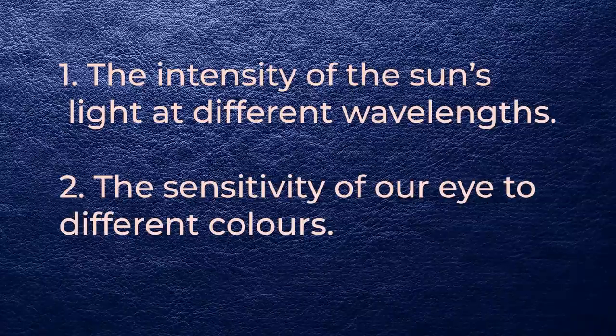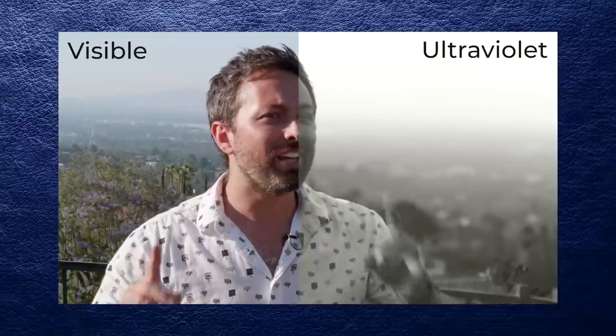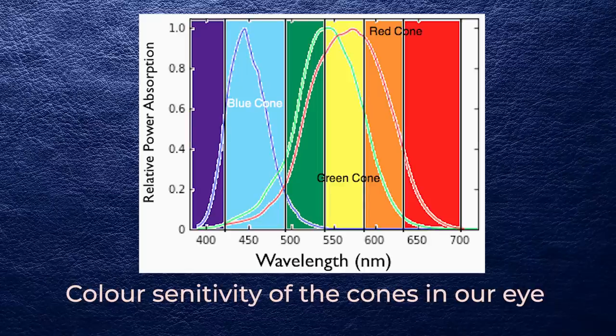Okay, so then what about violet? Shouldn't the sky be violet, since violet has a shorter wavelength and should get scattered more? You're right — violet should get scattered more, but there are two reasons why the sky isn't violet: the intensity of the sun's light at different wavelengths, and the sensitivity of our eye to different colors. If you look at this graph, the intensity of violet and ultraviolet wavelengths in sunlight is less than that of blue — so there literally is less violet and UV coming from the sun. There's a video by Veritasium where he uses a UV camera, and look at the sky — it looks very foggy in UV, because of this scattering. The other reason is that our eye is more sensitive to blue than to violet. That's why the sky is not violet.